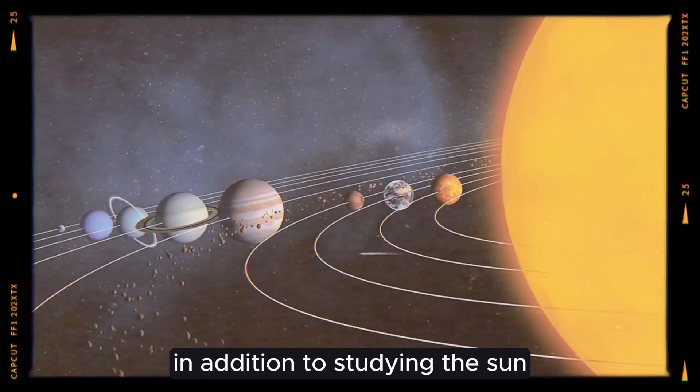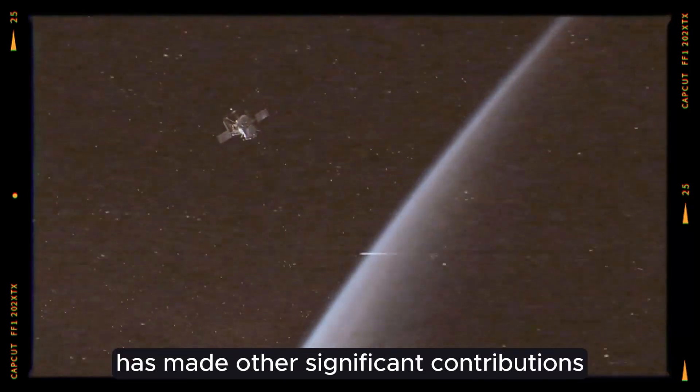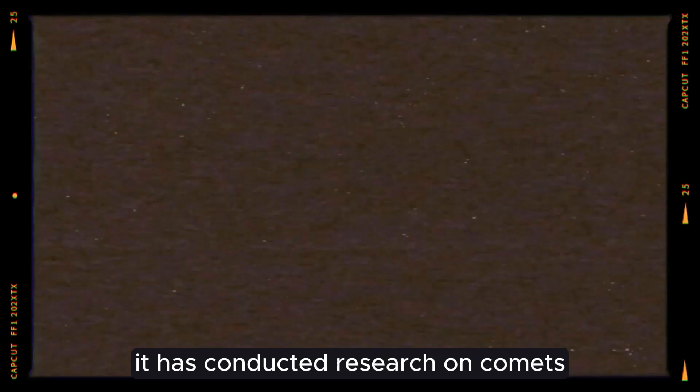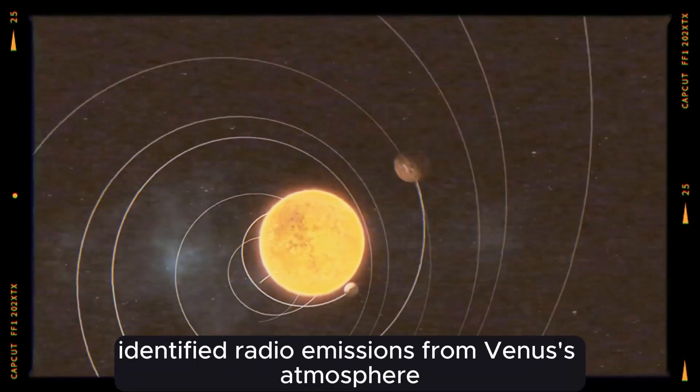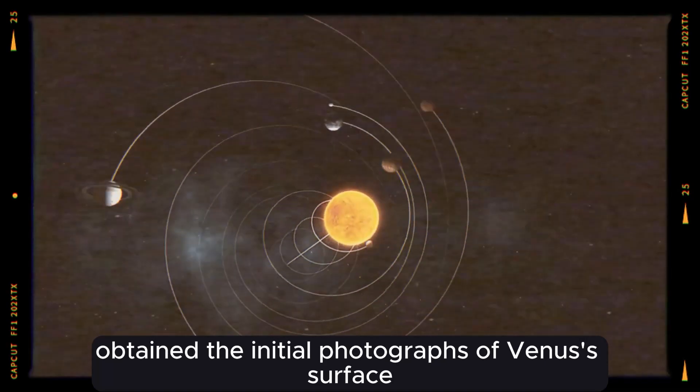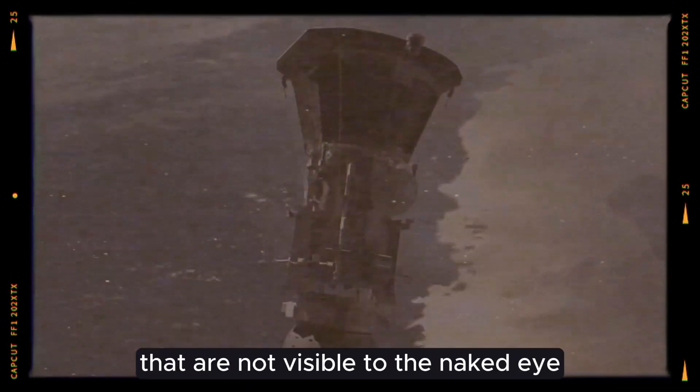In addition to studying the Sun, the Parker Solar Probe has made other significant contributions. It has conducted research on comets, identified radio emissions from Venus's atmosphere, and obtained the initial photographs of Venus's surface using wavelengths that are not visible to the naked eye.